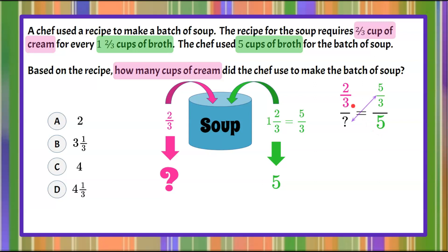So now we're going to use cross product property to solve this proportion. So five-thirds times that question mark, we'll use x, and then two-thirds times five. First we're going to simplify this product, two-thirds times five. Five has an invisible denominator of one so multiply the numerators, two times five is ten over three.